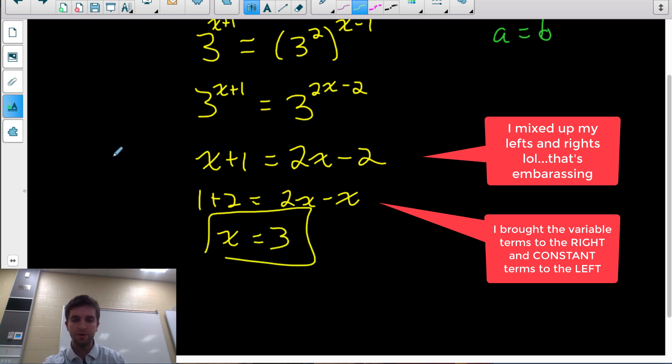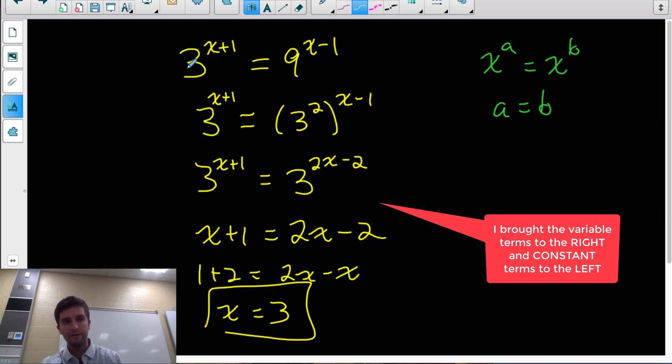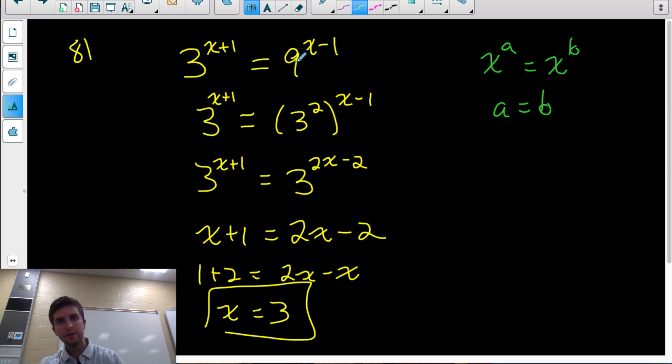So that equation is solved. You could check it back in your original equation. If I plugged 3 into the original, I would have 3 to the 4, which is 81. Is that equal to 9 to the 2? Yes, 9 to the 2 is also 81. So left side is right side.